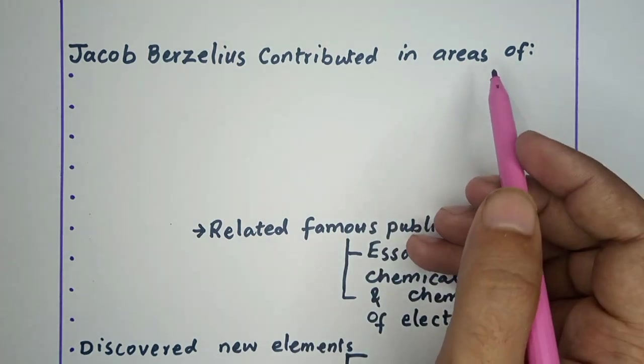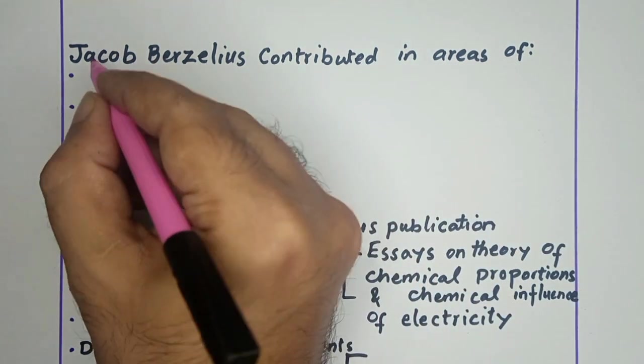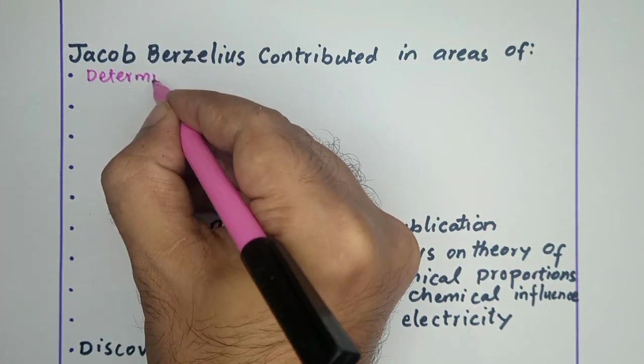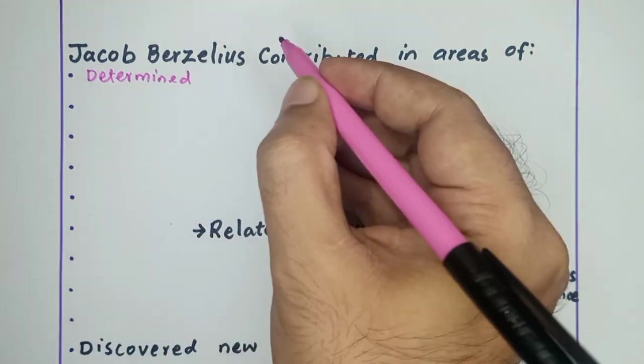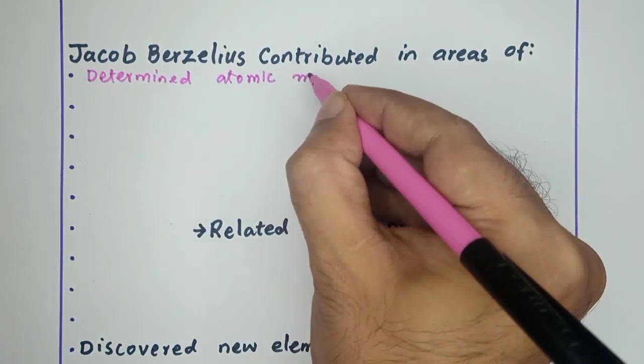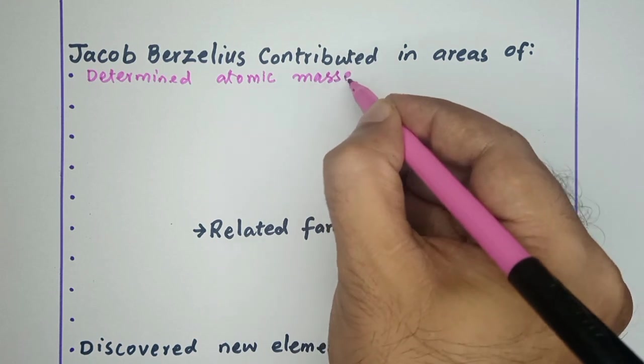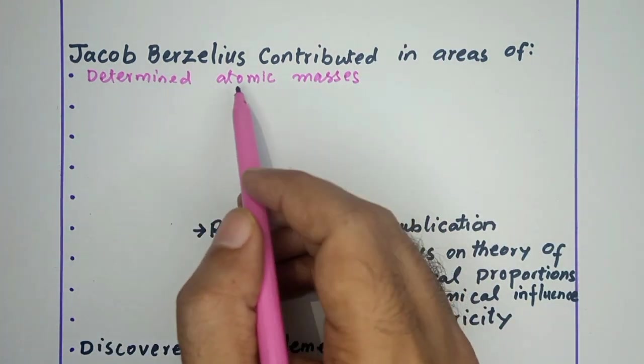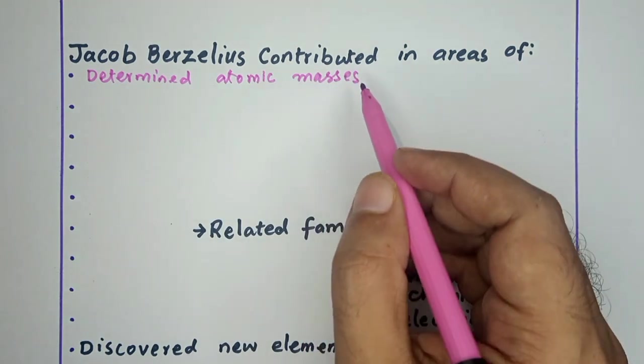Jacob Berzelius contributed in areas of determining atomic masses. For this purpose, Jacob Berzelius conducted about 2000 experiments.